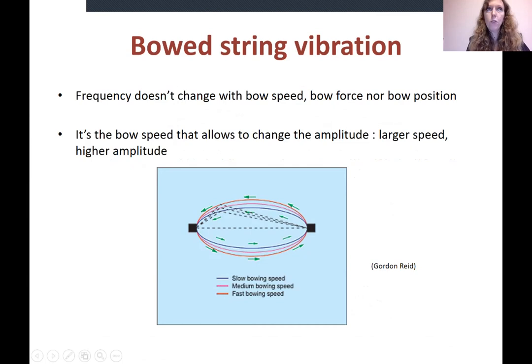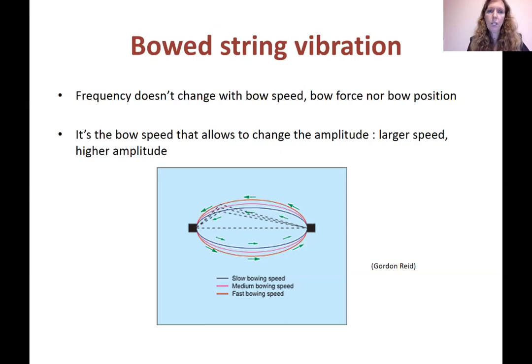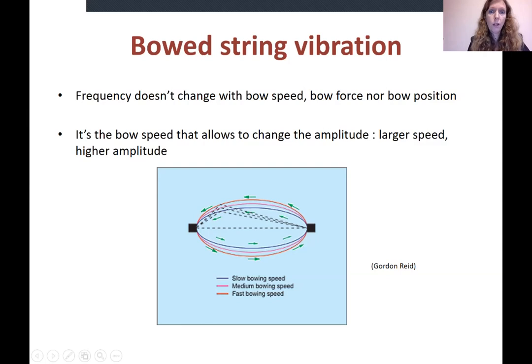The frequency is fixed by the speed of the wave traveling in the string, and this doesn't change with bow speed, bow force, or bow position — it's fixed by the string material and string tension. Amplitude is changed by using the bow speed: a larger speed ends up in a higher amplitude. Here you have an animation showing different speeds — blue is slow, pink is medium, red is fast — and you can see the amplitude growing as the kink gets bigger.